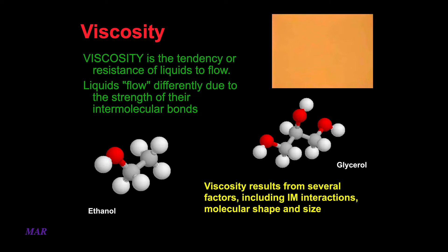The more OHs you have, the stronger the interaction will be between molecules. Glycerol, a triol, has three OHs. So one reason why glycerol is slower to pour is that the molecules really hold on to each other, making it harder to flow.